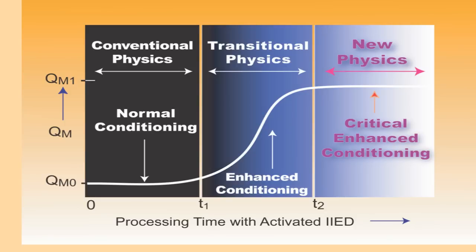If we actually take the intention imprinted device out of the experimental space before we reach the time T2 and we store the device somewhere else, the Q sub m just slowly decays, over months actually, back to background level, this value Q sub m zero.